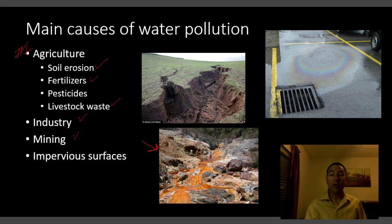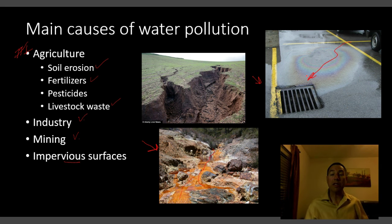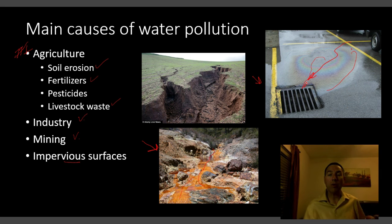A lot of our water pollution comes from runoff, as this picture shows. We have a lot of impervious surfaces — concrete and asphalt parking lots — that don't allow water to sink into the ground where it would naturally get filtered. The pollutants run off into the nearest drain, and in many states those drains go directly to the nearest water body. You can see this large plume of oil draining right into a drain here. Unfortunately, people see this going to a drain and think it's going to get cleaned up — most people consider it out of sight, out of mind.